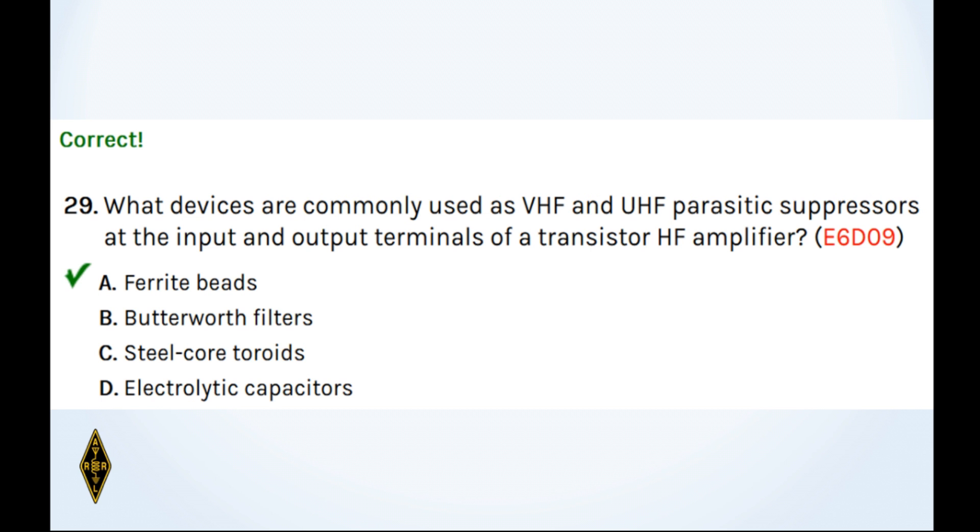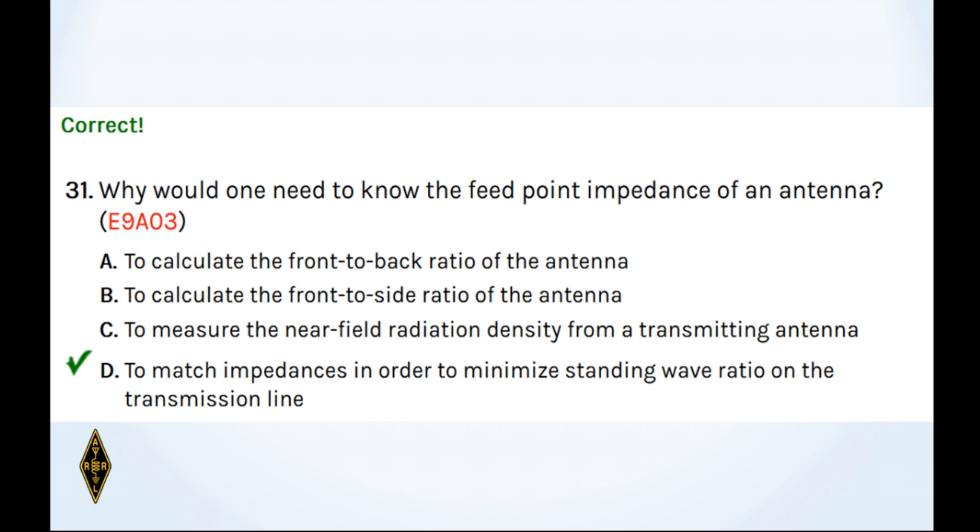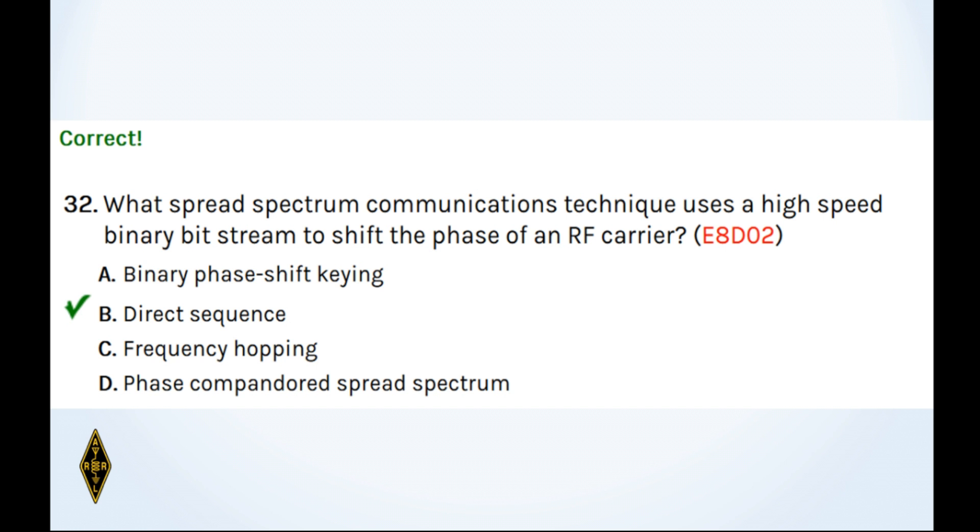And what devices are commonly used as VHF and UHF parasitic suppressors? Ferrites are your friend. Ferrite beads. And which amateur stations are eligible to operate as Earth stations? Remember, any station could be used. It depends on the control operator's class of license. So, any amateur station, subject to the privileges of the class of the operator license. And 31, why would one need to know the feed point impedance of an antenna? Well, to match impedances for maximum transfer of power. And 32, what spread spectrum communications technique uses a high-speed binary bitstream to shift the phase? Remember, there are two kinds of frequency hopping used in amateur radio, spread spectrum used in amateur radio. It's frequency hopping or direct sequence. And this is direct sequence.